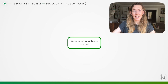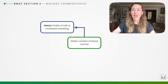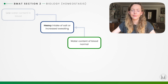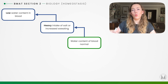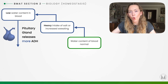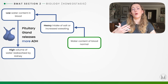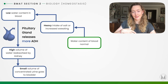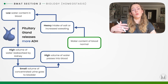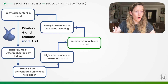Here's an example of homeostasis keeping water content of the blood constant. With a heavy intake of salt or increased sweating — such as exercising or eating salty crisps — our body's blood water content lowers. That is detected, the pituitary gland releases more ADH, and that tells the kidneys to reabsorb a higher volume of water. Therefore we urinate less: a smaller, more concentrated volume of urine. There is now a higher volume of water in the blood, returning us back to our normal water content.